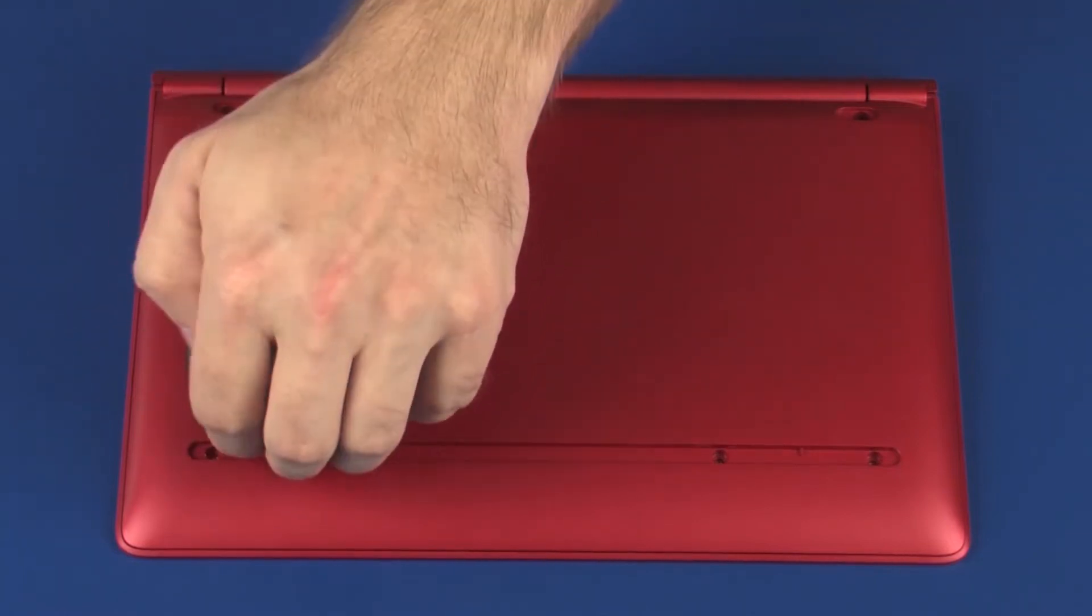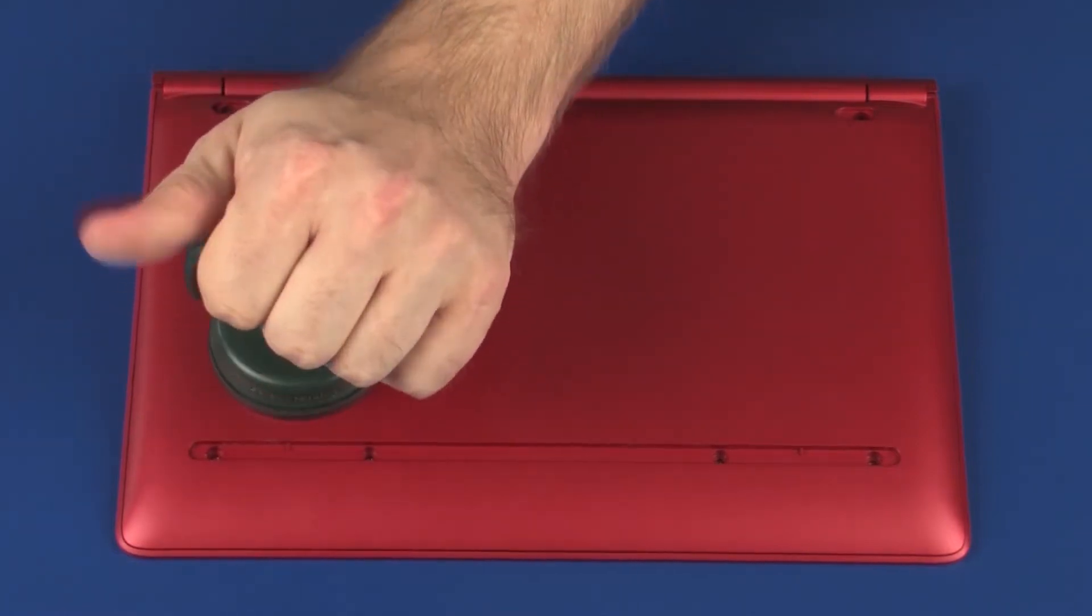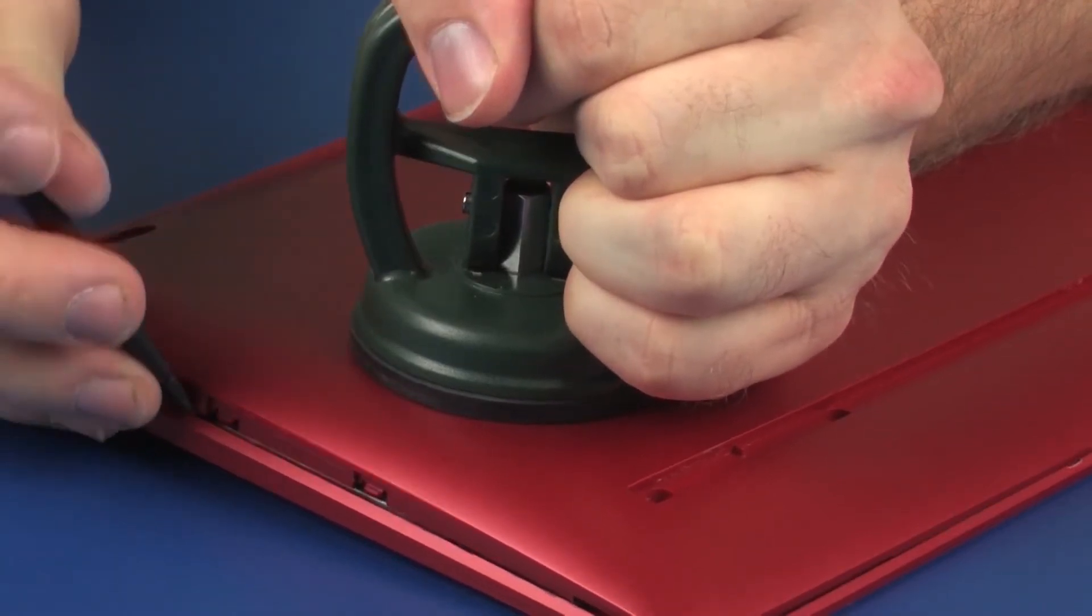Using a suction cup and a non-metallic flat-bladed tool, carefully separate the base enclosure from the top cover and remove.